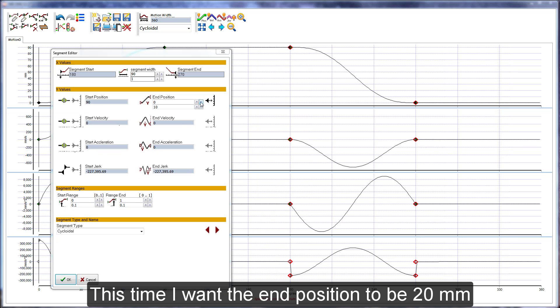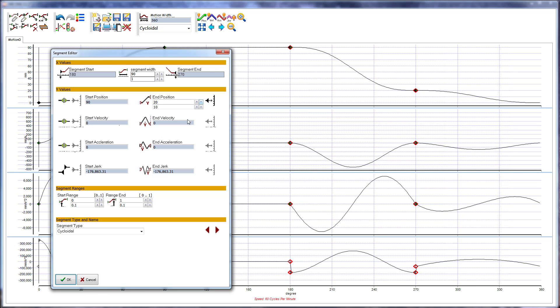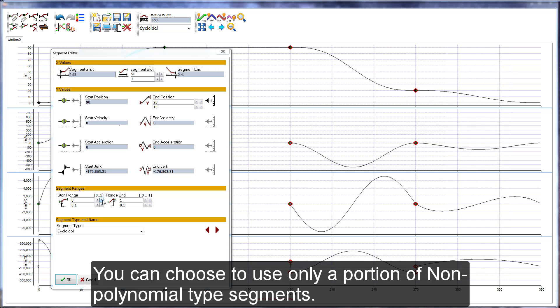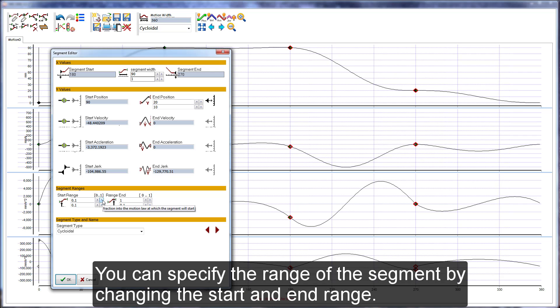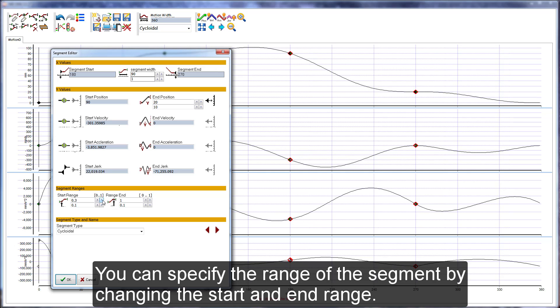This time I want the end position to be 20 millimeters. You can choose to use only a portion of non-polynomial type segments. You can specify the range of the segment by changing the start and end range.